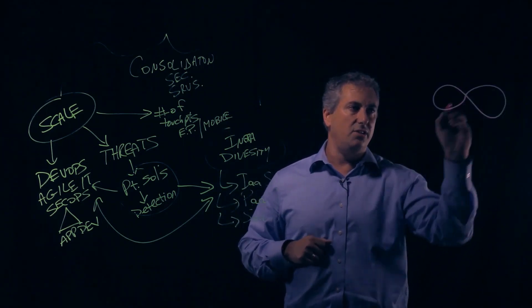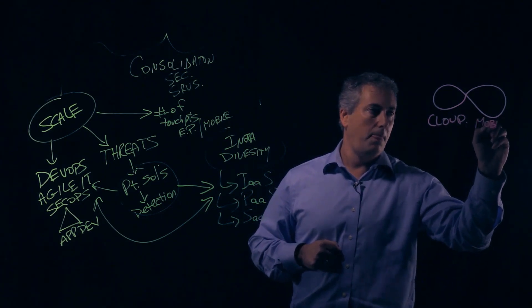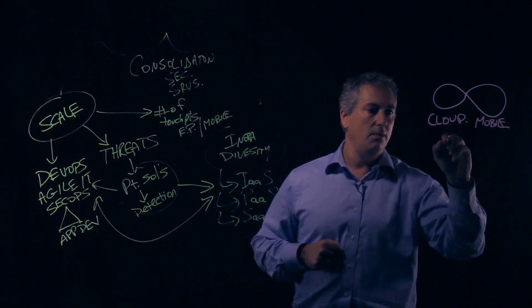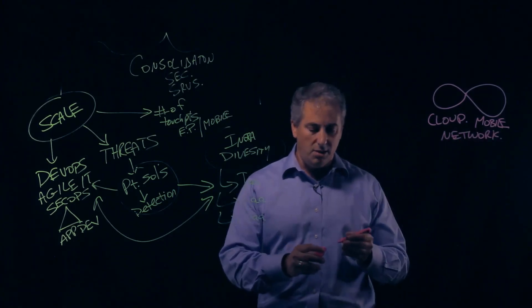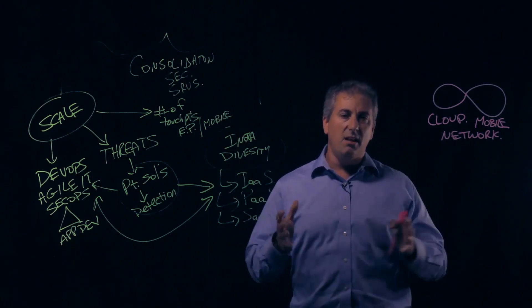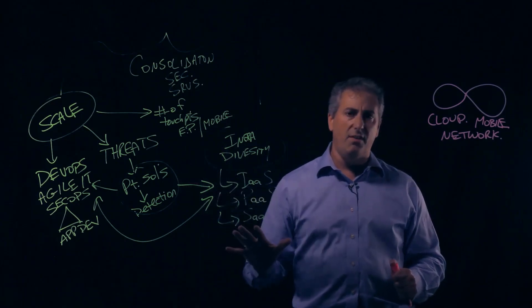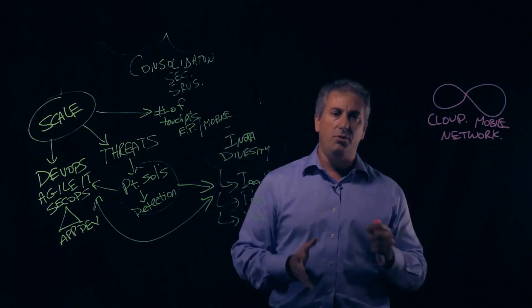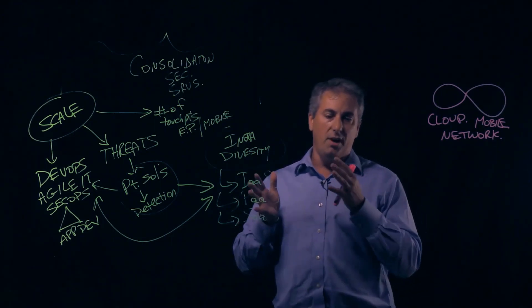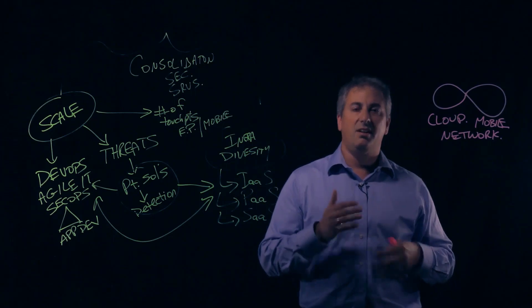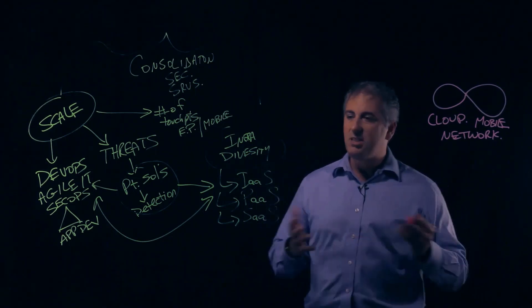So this brings us to where Checkpoint's delivering innovation to the market. So our Infinity architecture is centered around delivering services across cloud, mobile, and network, but doing so with a unified security platform that provides consolidated visibility across threat intelligence and an entire view of what's happening within the environment. And at the same time doing so with both preemptive, both pre-infection and post-infection technologies that provide an alignment with a defense in depth strategy.